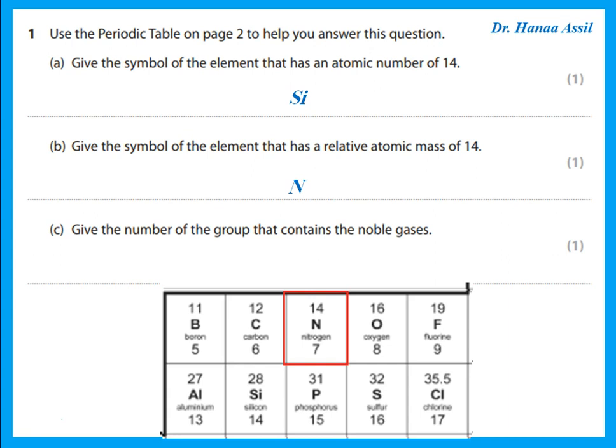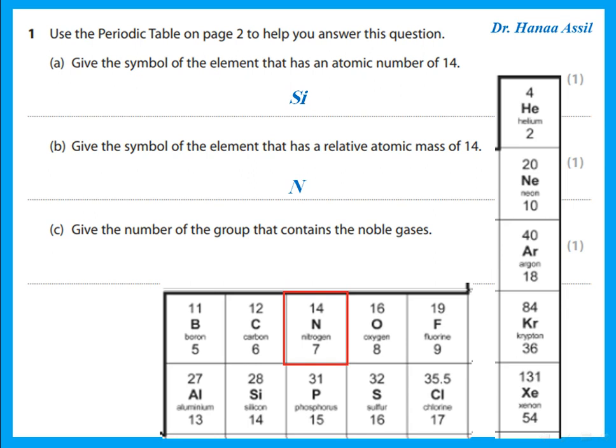Remember that if he was to say what is meant by atomic number, atomic number is the number of protons. What is meant by atomic mass or mass number? That is the number of protons plus neutrons. Give the number of the group that contains noble gases — helium, neon, argon, krypton. This is called group 0 or group 8.